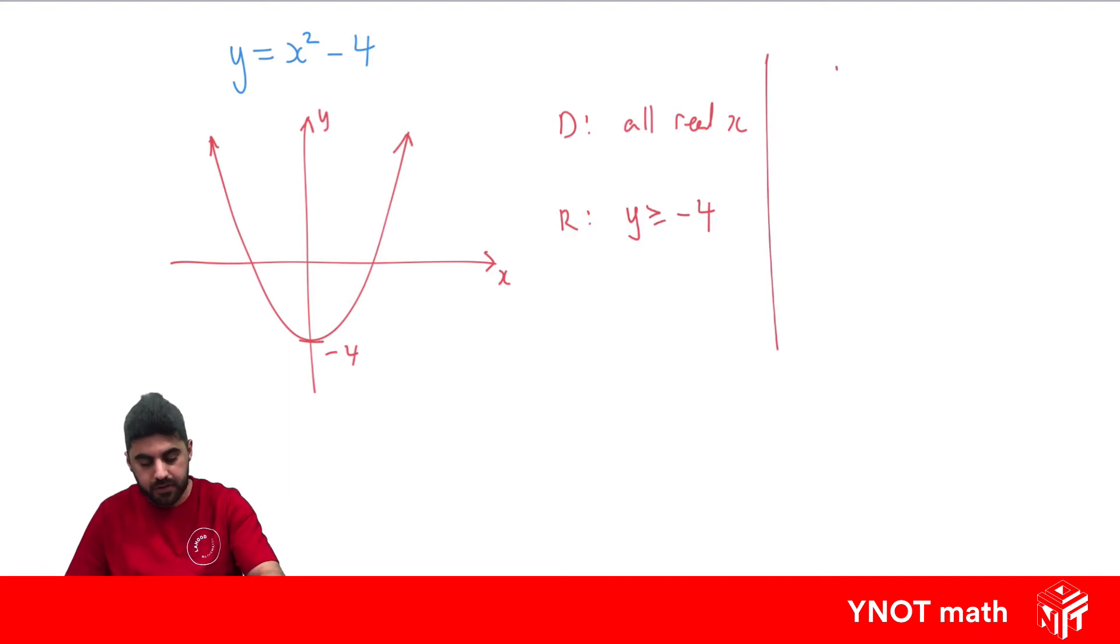Let's have a look in interval notation. For all real x we already know we can write that between minus infinity and infinity. But for our range, well we know it can equal minus 4 but it has to be also above minus 4. So if it can equal the value we put a square bracket and we start with our lowest value which is minus 4, and our highest value, well it can go anywhere towards infinity but it can never equal infinity. So we put the curly bracket on that side.